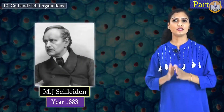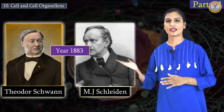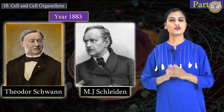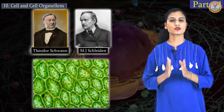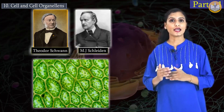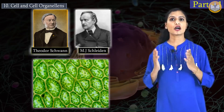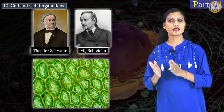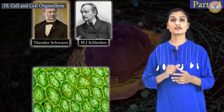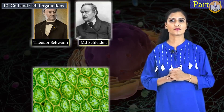In 1883, two scientists M.J. Schleiden and Theodor Schwan formulated a theory of the structure of a cell. In that theory, they said all living organisms are made up of cells, and the cell is the fundamental component of living organisms.